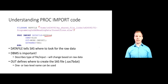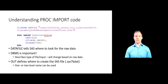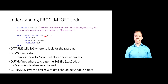You can use a one or two-level name for the OUT option. A one-level name will automatically go to the work library; a two-level name can go to any library where you have write access. GETNAMES tells SAS that the first row of data in the raw file corresponds to variable names. We'll also see an example where that's not the case.